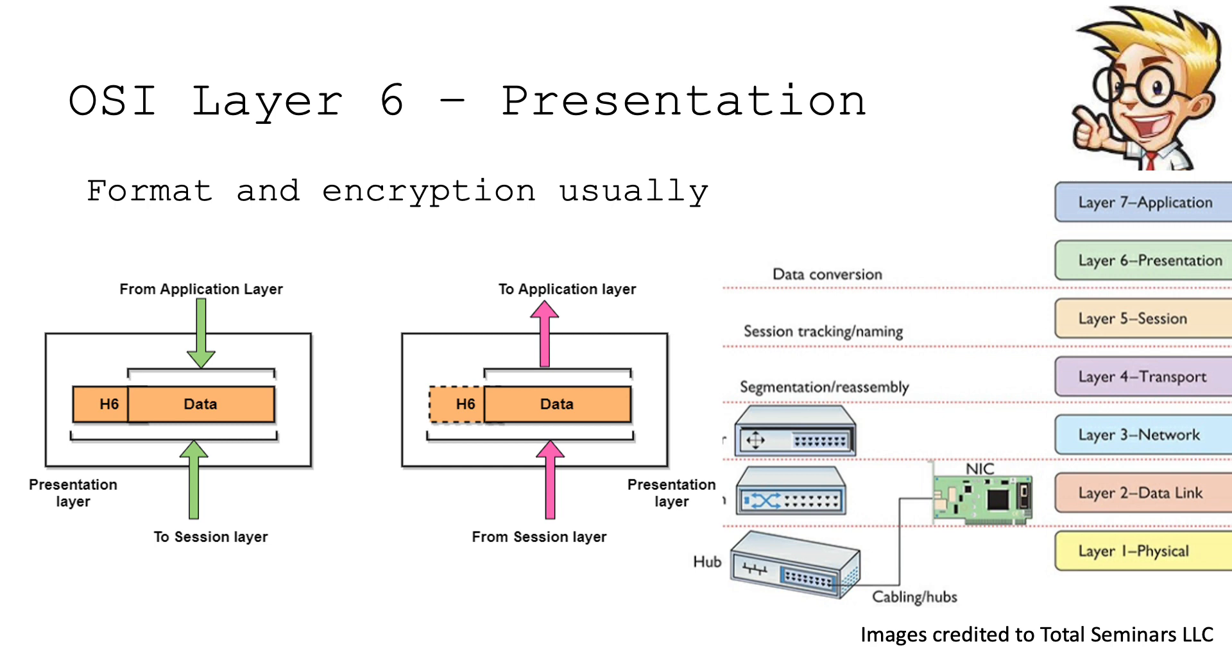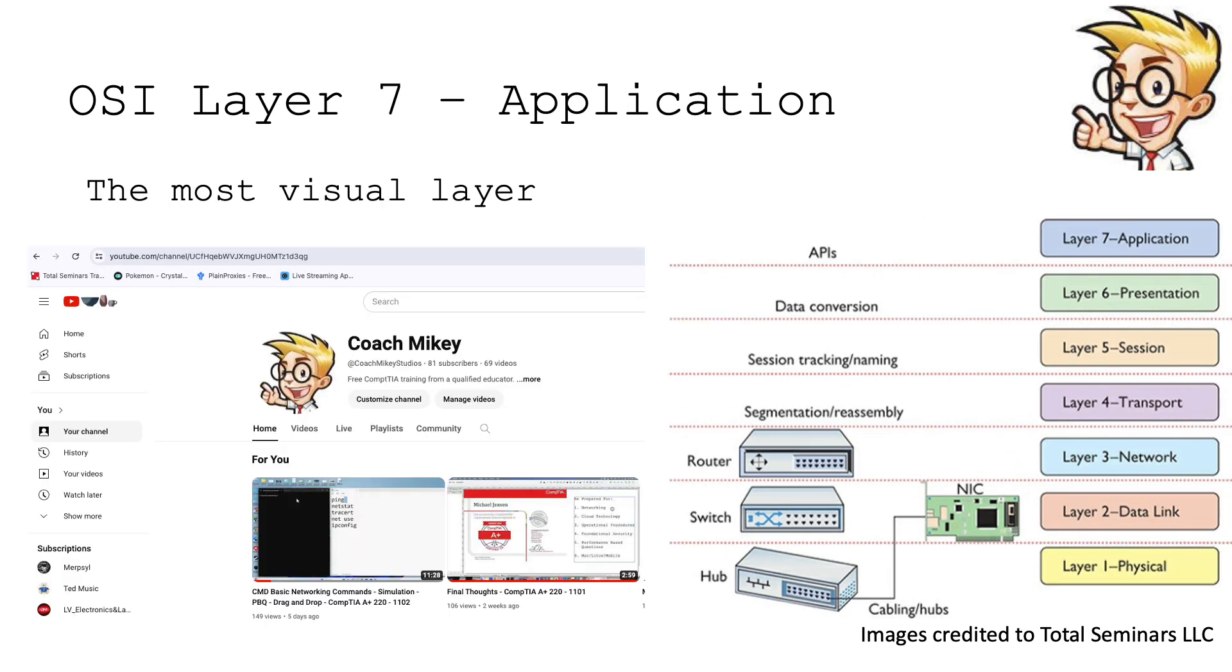Layer six is presentation. This really focuses on the format and encryption most of the time. Here's a great visualization of something coming from the application layer and it goes back down to the session layer. So maybe the application is trying to send something to a computer. On the other end, we have from the session layer, we have some data and we need to send that to an application. So this is how we present the data coming in and out and where it's going. It really depends on what you're doing. It'll be a little bit more clear once we look at layer seven.